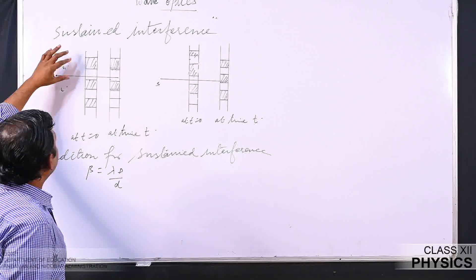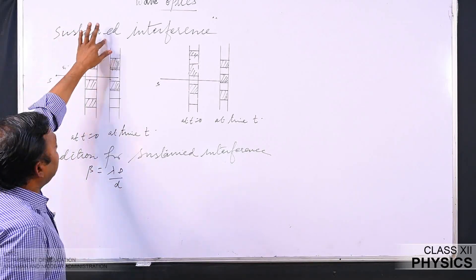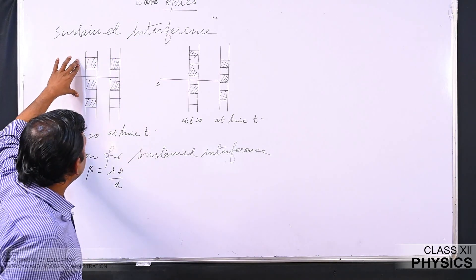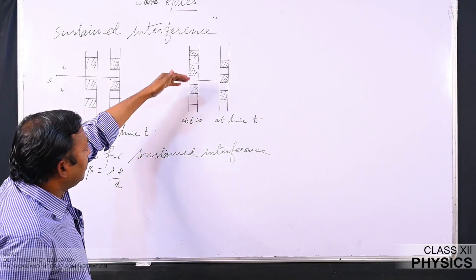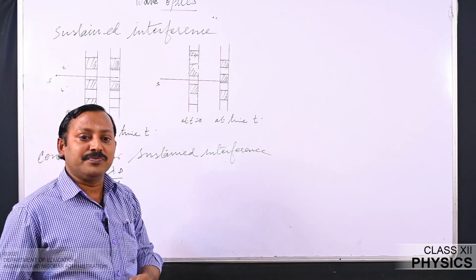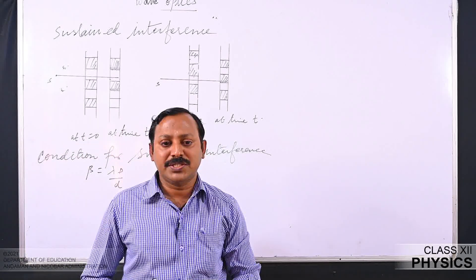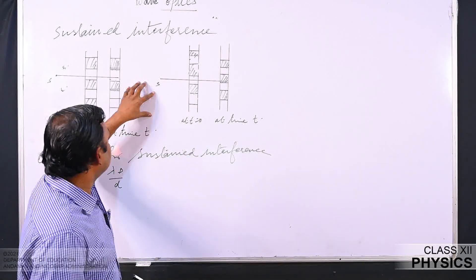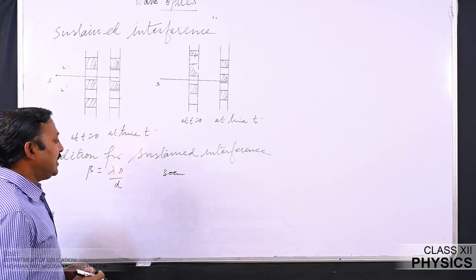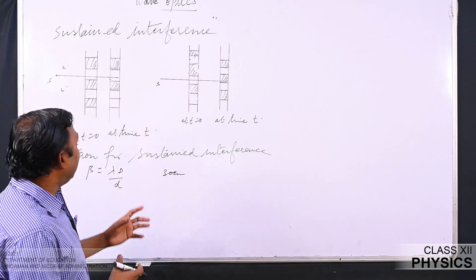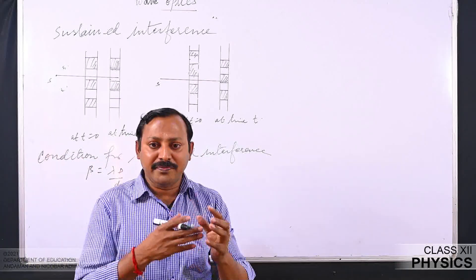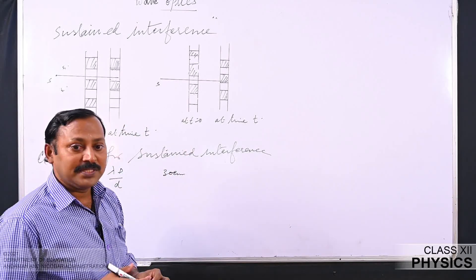The path difference between first and second source must not be greater than 30 centimeters. If the path difference is more than 30 cm, it introduces a phase change with time, and because of that phase difference, the interference pattern on the screen will not remain stable.